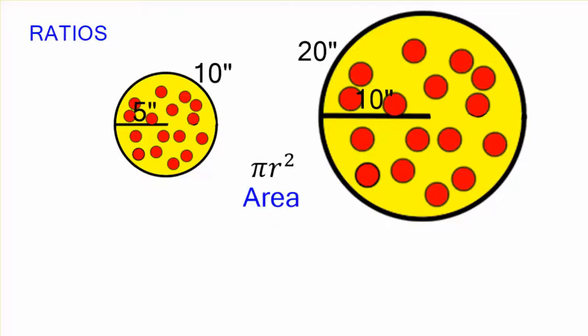But what about the area? That's pi r squared. That's 25 pi and 100 pi. It's 1 to 4. So area is 2 dimensional. So now it's 1 to 2, but you square both of those to get the ratio of the area. 1 squared to 2 squared.